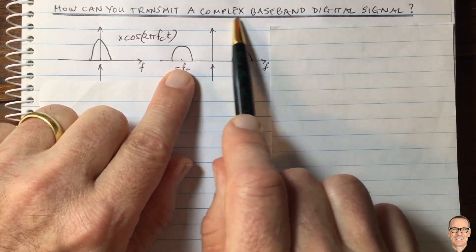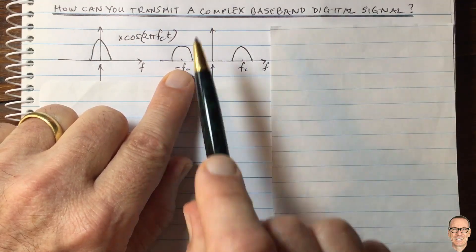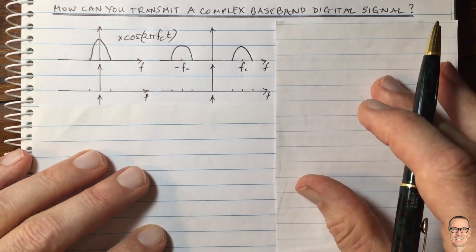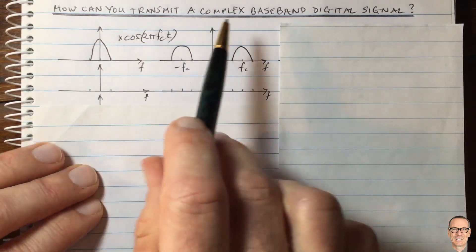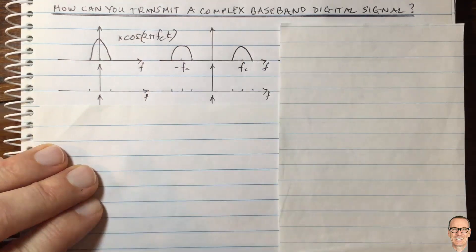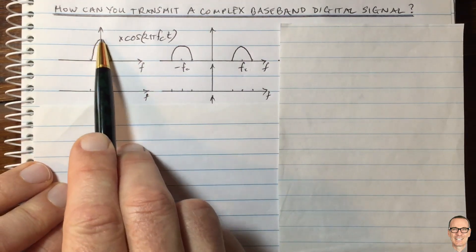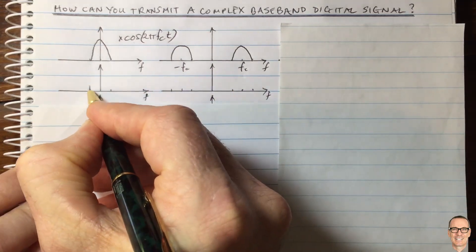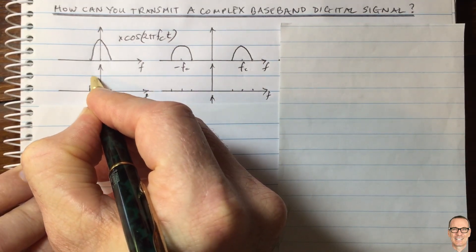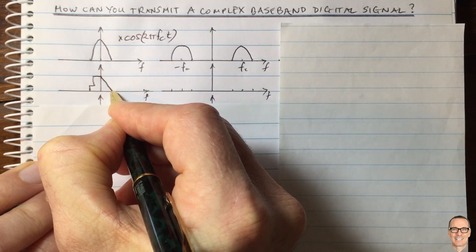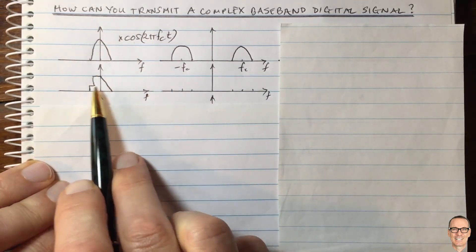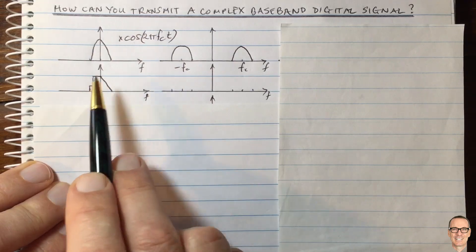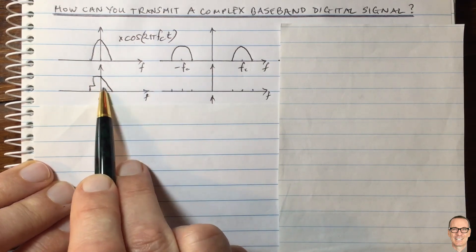Now let's think about complex baseband digital signals, which is what we're looking at in this video. Complex baseband signals are not conjugate symmetric in the frequency domain. I'm going to draw one here as a sort of typical example to make it absolutely clear that it is not a real signal, because this is definitely not symmetric.